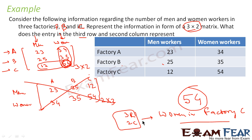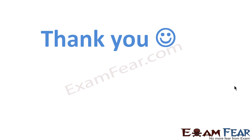So what have we done here? We represented the data of men and women workers across factories in matrix form, got two representations, selected the 3×2 one as required, and found that the entry at the 3rd row and 2nd column — which is factory C and women workers — gives the value 54. That is women workers in factory C.